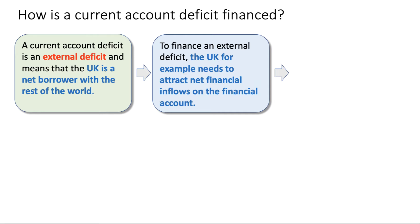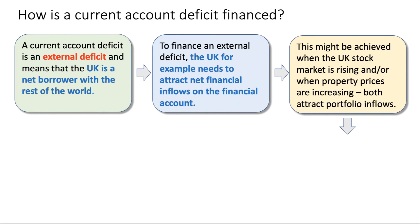To finance an external deficit, the UK needs to attract net inflows of money on the financial account — we covered that in a previous video. So if you're running a current account deficit, you must attract net financial inflows to finance it. One way: the UK stock market might be doing well, with share prices rising on the FTSE 100 or FTSE 250 index. Rising share and property prices could attract an inflow of portfolio flows from overseas investors looking to buy stock and property in the UK, which counts as a financial inflow helping cover the current account deficit.